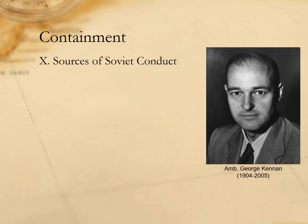The earliest answers came from George Kennan, the US ambassador to the Soviet Union. In a famous article entitled 'The Sources of Soviet Conduct,' published under the pseudonym X and long referred to as The X Article, Kennan argued in favor of a policy of long-term, patient, but firm and vigilant containment of Russian expansive tendencies. More broadly, this policy came to be known as containment.